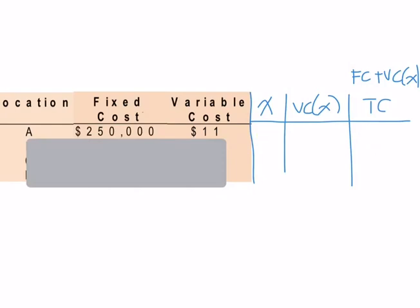Now, we choose x equal to 10,000. So the variable cost time x is equal to 110,000 and the total cost is equal to 360,000. So this number is more easy to plot in our graph.